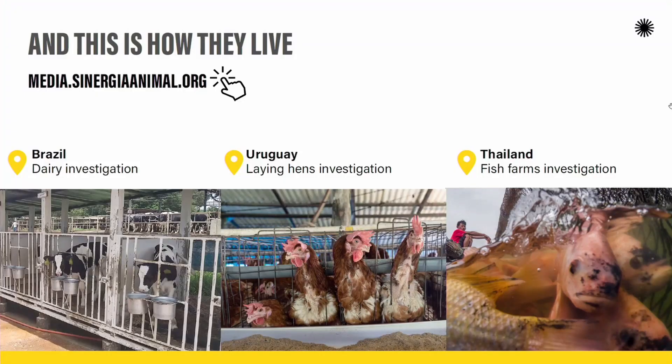Here you have another investigation: battery cages for hens in Uruguay — cramped cages, hens with loss of feathers, dirty conditions without the possibility of opening their wings, walking freely, or performing their most basic and natural behaviors. And here is an investigation from Synergy Animal in fish farms in Thailand that also showed very troubling conditions for fish.